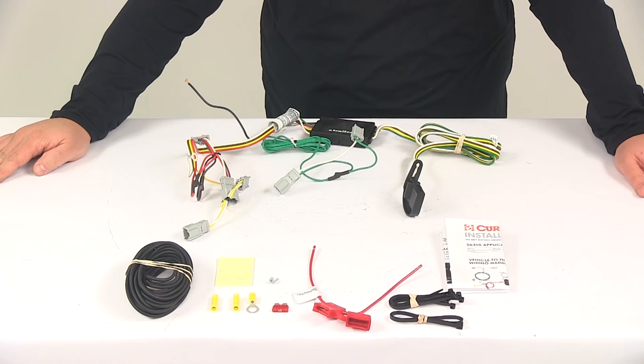When it comes to the maximum amperage for the stop and turn lights, we're looking at three amps per circuit, and for the tail lights we're looking at six amps per circuit.